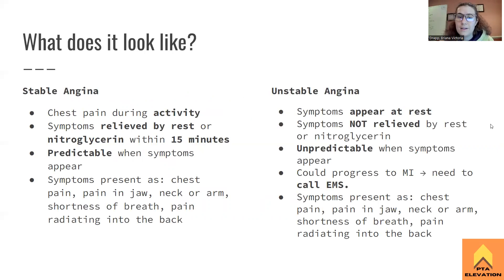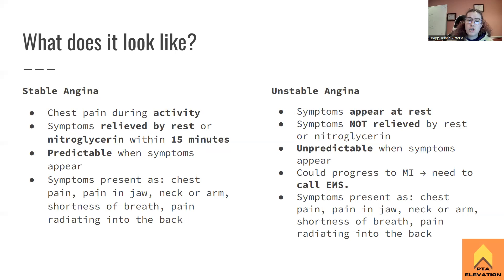The two types most important for the boards are stable angina versus unstable angina. It's really important to know the difference because this is where safety questions come into play. Stable angina is chest pain that occurs during activity — walking, running, biking, climbing stairs. The symptoms of stable angina should be relieved with rest, so just tell the patient to sit down for about five minutes and see what happens.